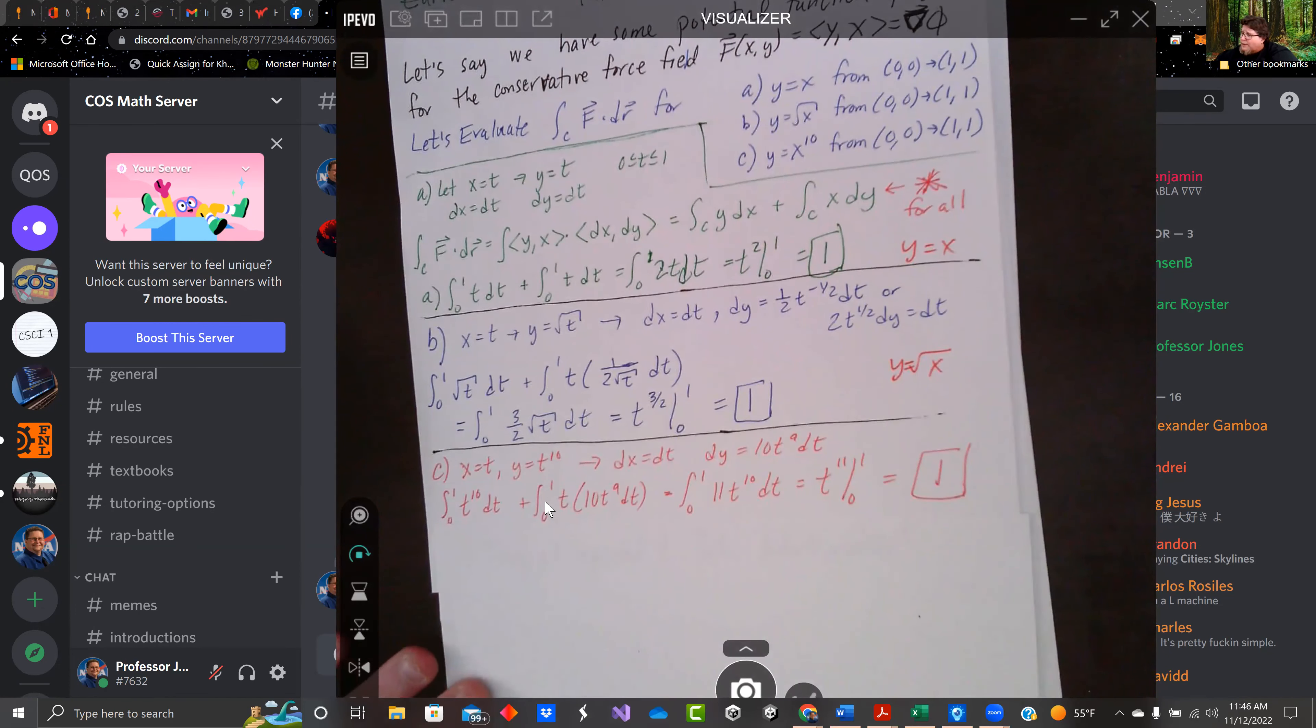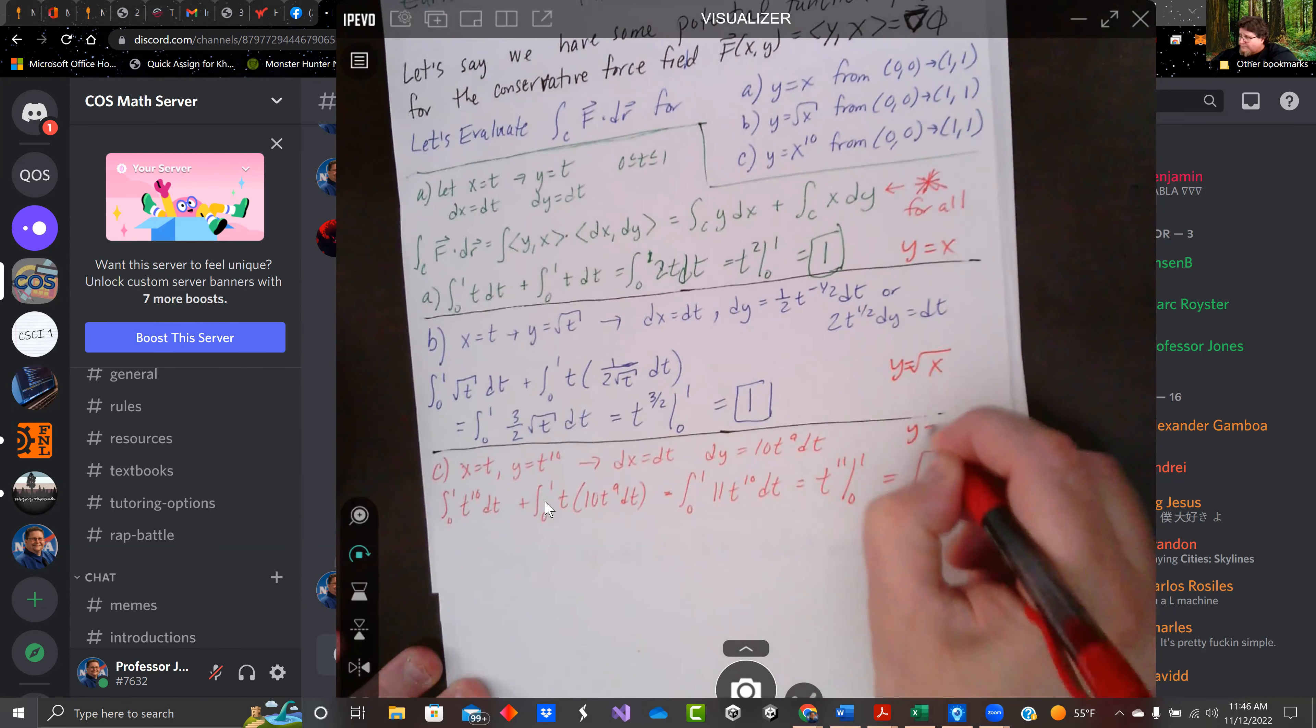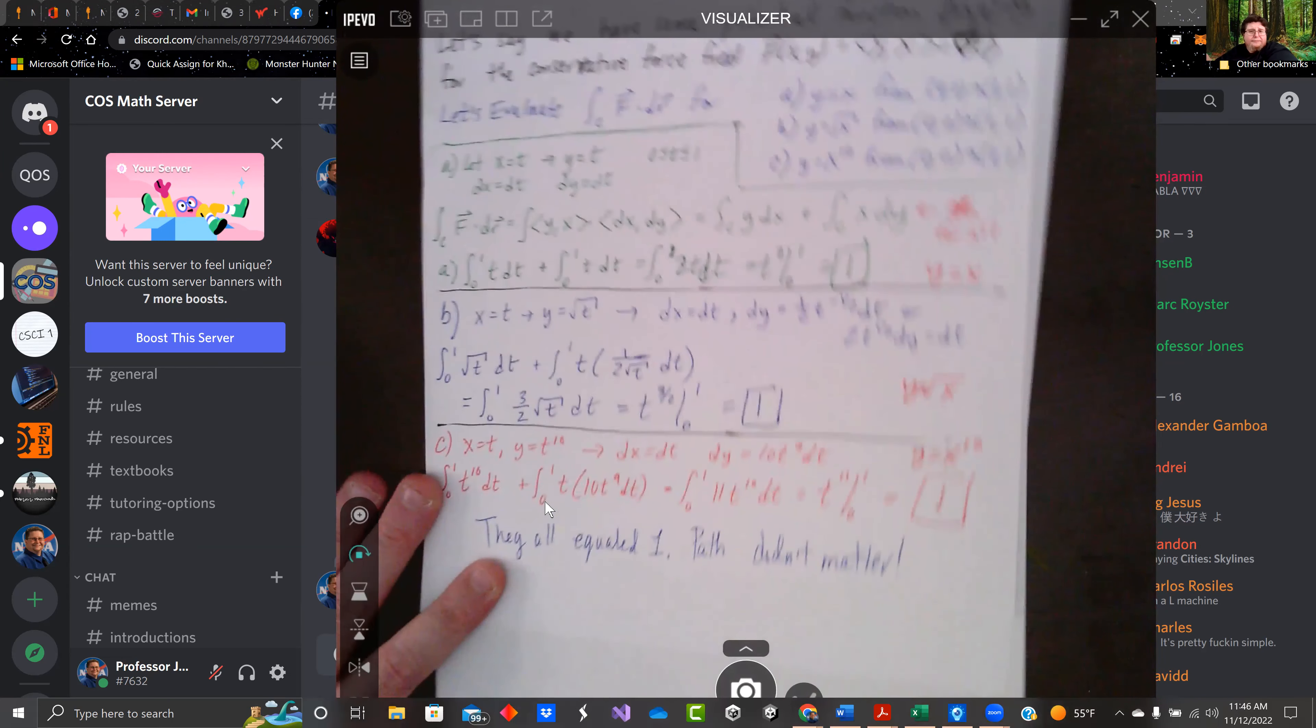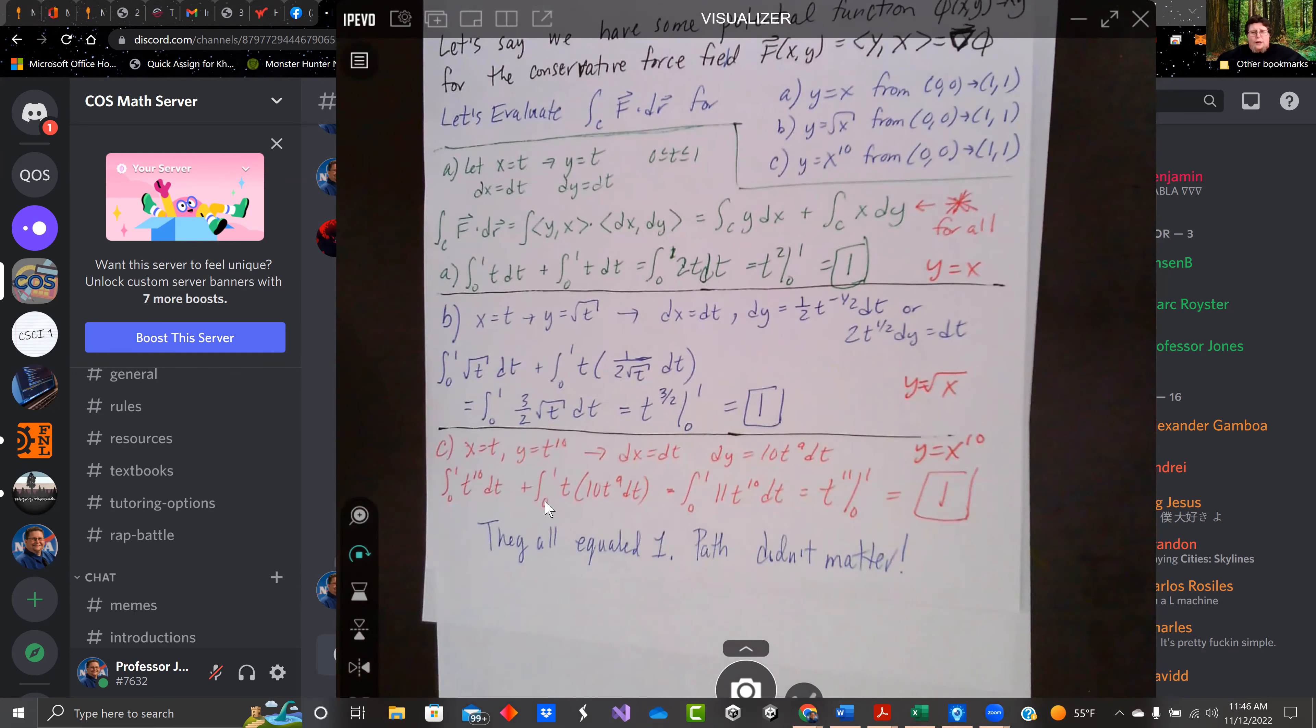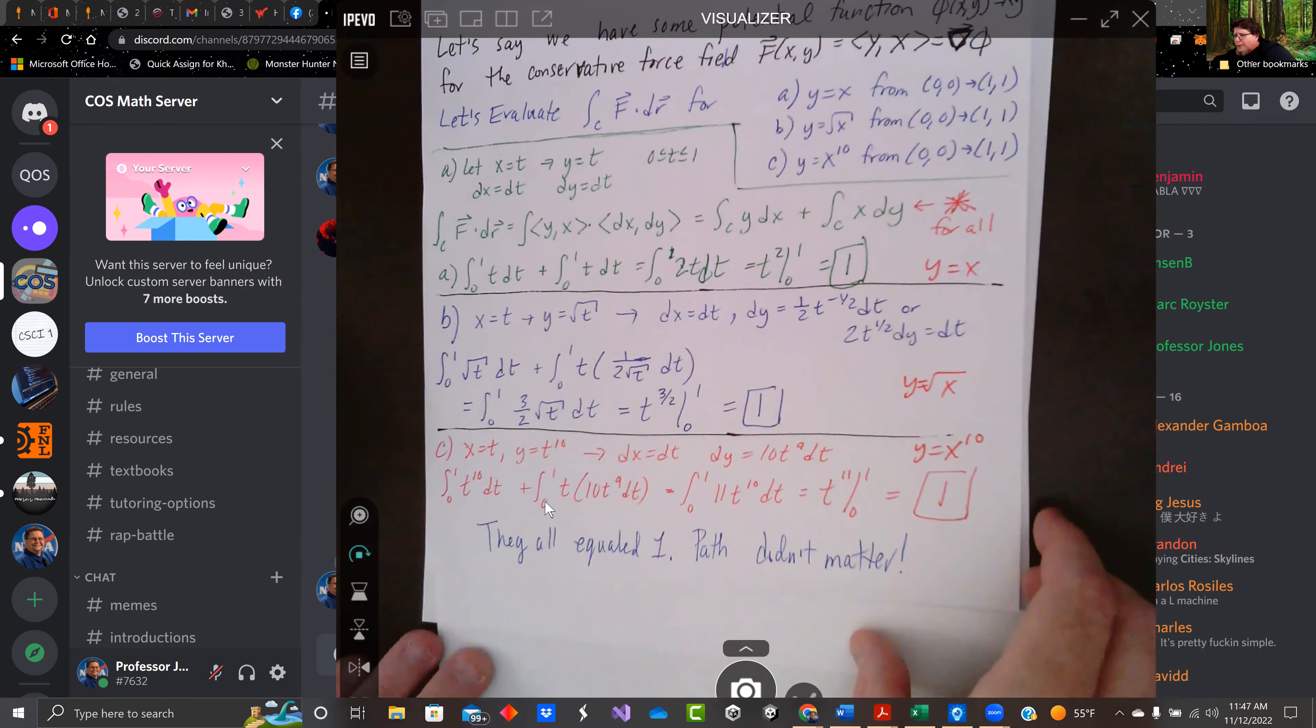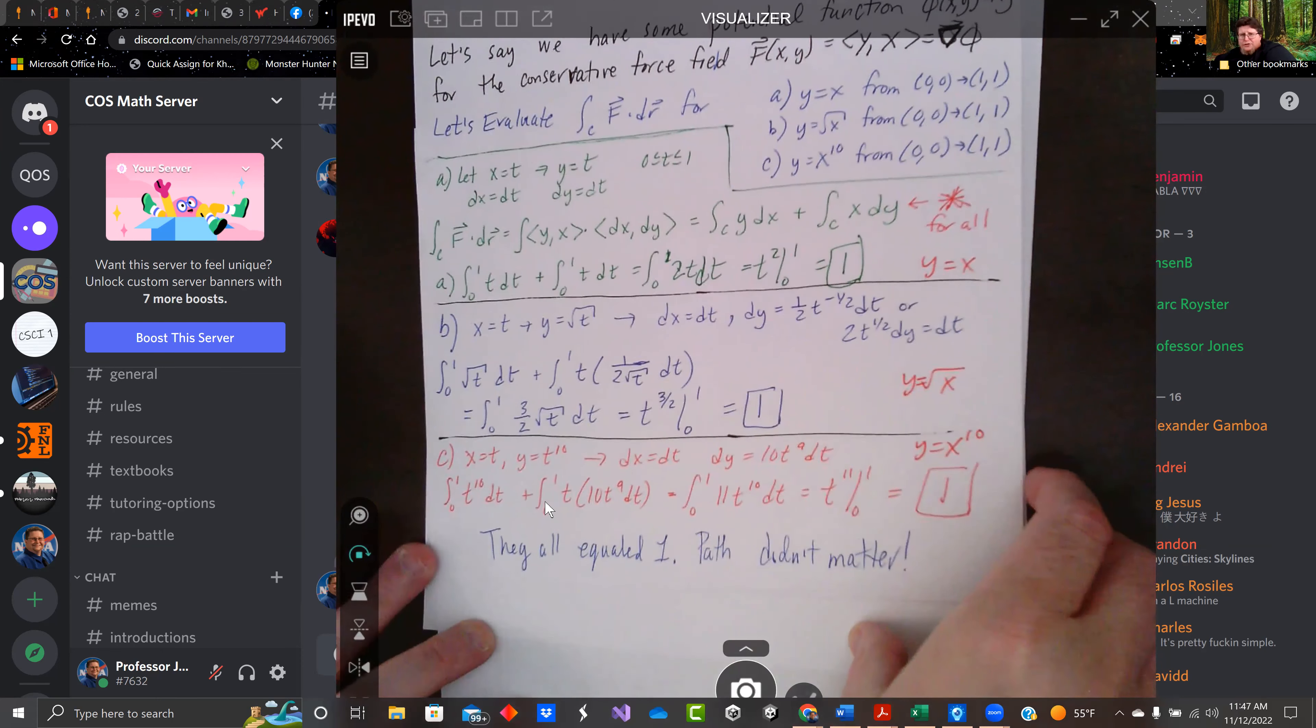Along this one, we have y equals x to the 10th. Same process. X equals t, so y equals t to the 10th. When you work this out, you're going to see you get one again. They all equaled one and the path didn't matter. I recommend pausing it, working that on your own. Make sure you get that.